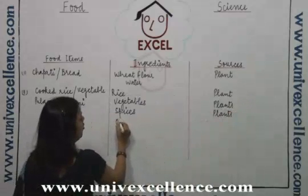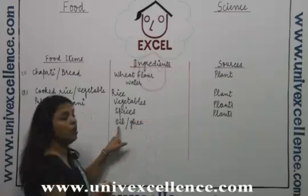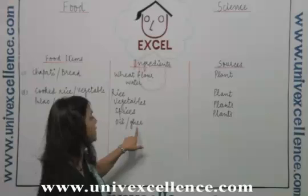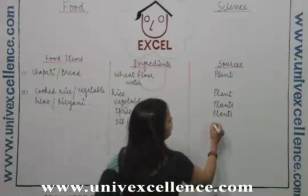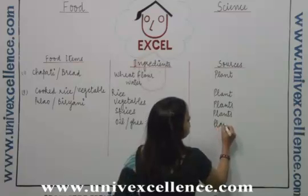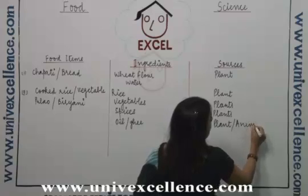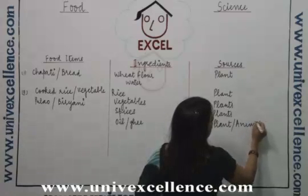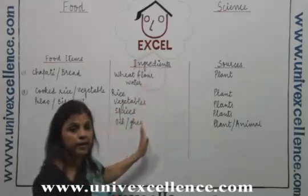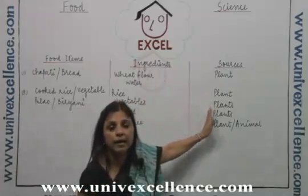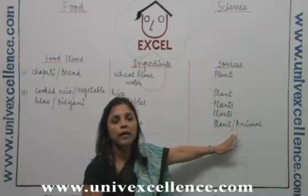We also use oil or ghee. Oil we get from plants and ghee we obtain from animals, so it could be a plant source or animal source. These are the different ingredients which we get either from plants or from animals.